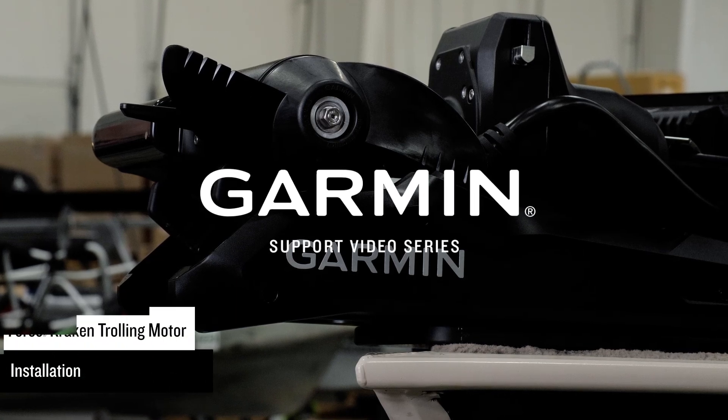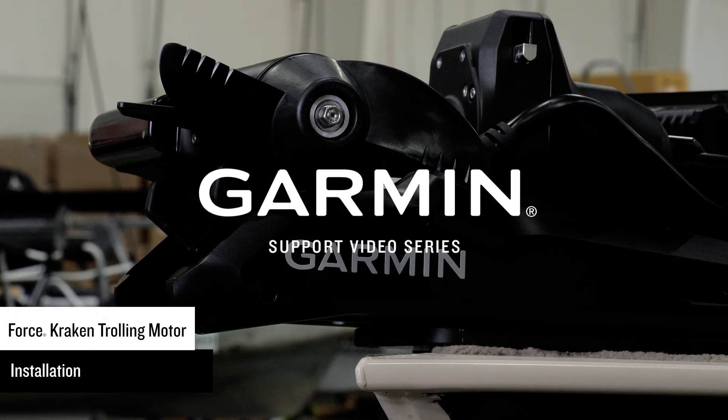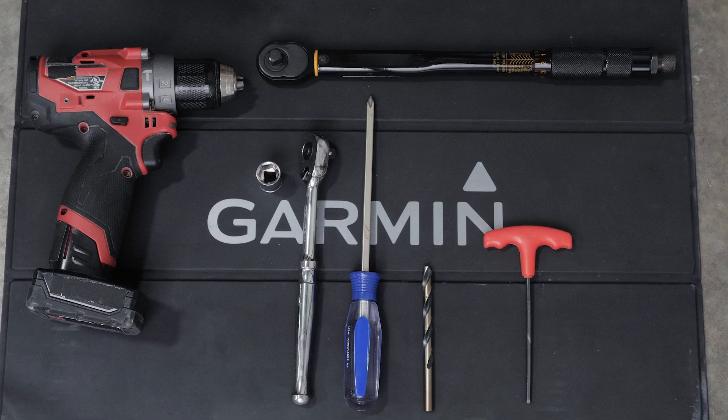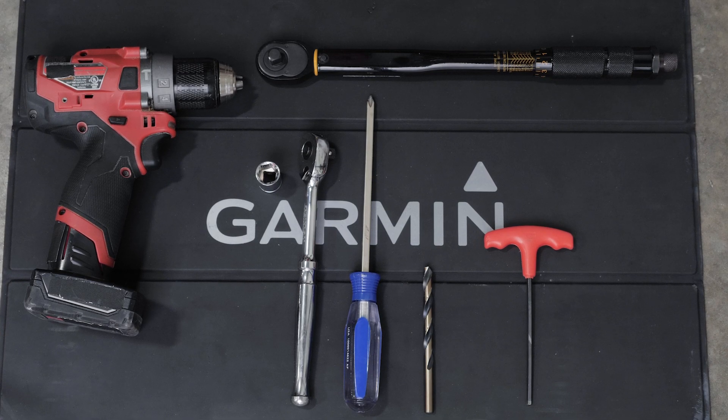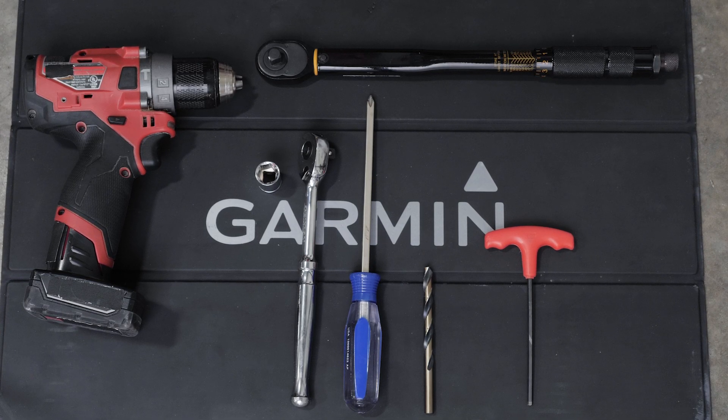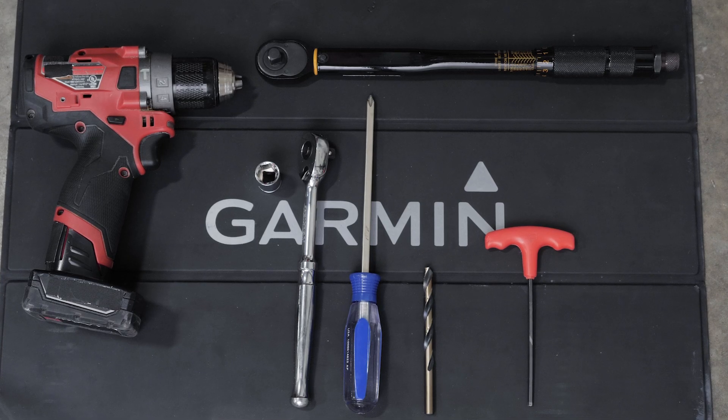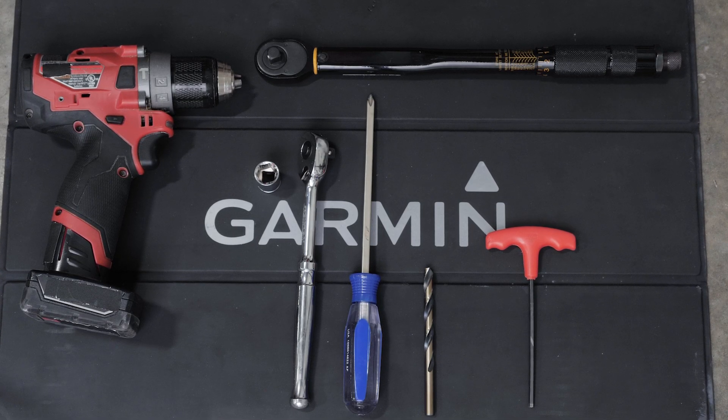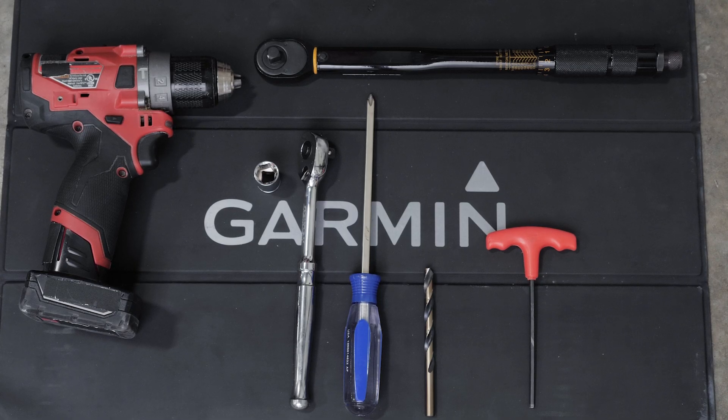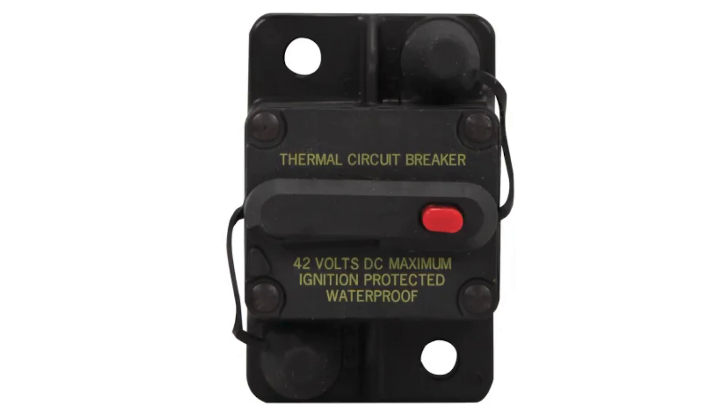Today we're going to show you how to install the Force trolling motor. For this process, you will need a drill, 5/16 inch or 8 millimeter drill bit, a number 2 Phillips screwdriver, a 4 millimeter hex bit or wrench, a 9/16 inch or 14 millimeter socket, a torque wrench, and a circuit breaker rated for continuous 60 amps. Garmin recommends two people for this installation.